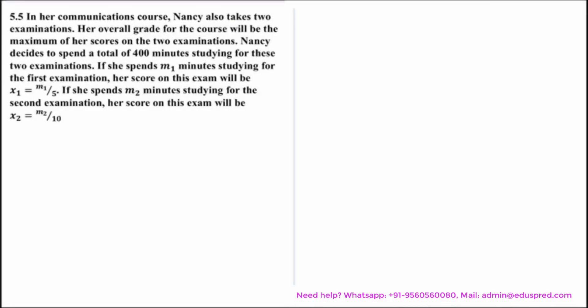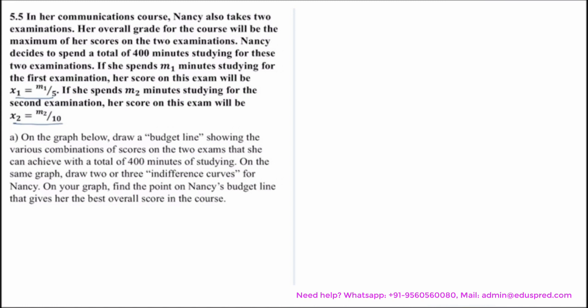In this video we are solving a question about Nancy's communications course, where she takes two examinations. Her overall grade will be the maximum of her scores on two exams. Nancy decides to spend a total of 400 minutes studying. If she spends M1 minutes on the first exam her score is x1 = M1/5, and if she spends M2 minutes on the second exam her score is x2 = M2/10. We are asked to draw the budget line showing score combinations achievable with 400 minutes, draw two or three indifference curves, and find the point on the budget line giving her the best overall score.